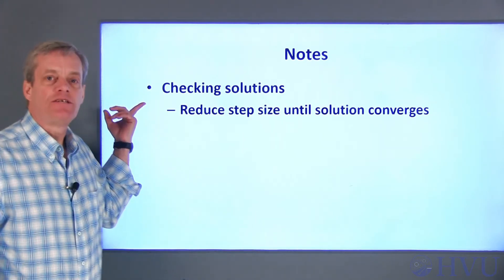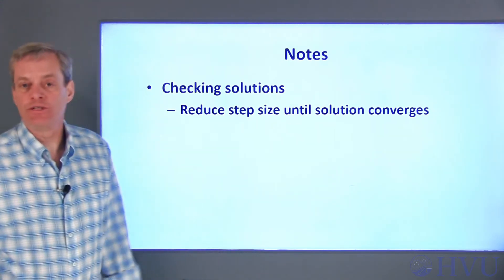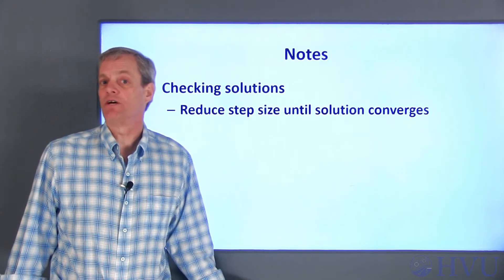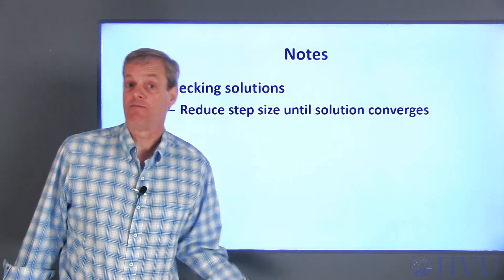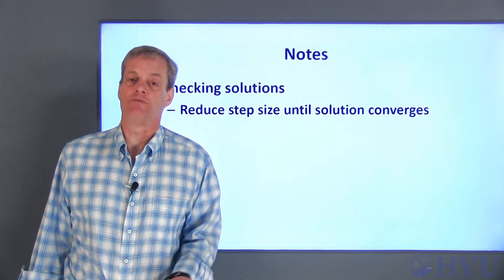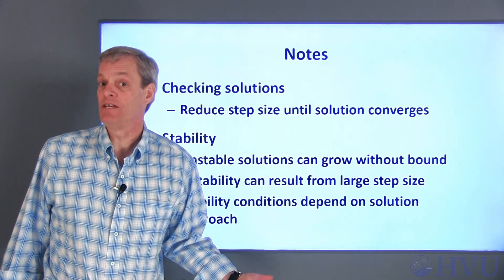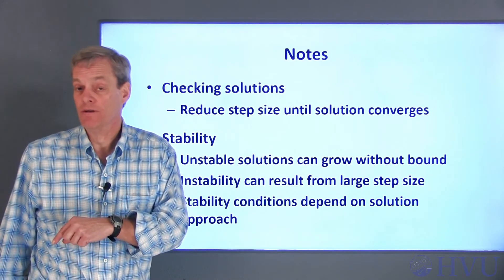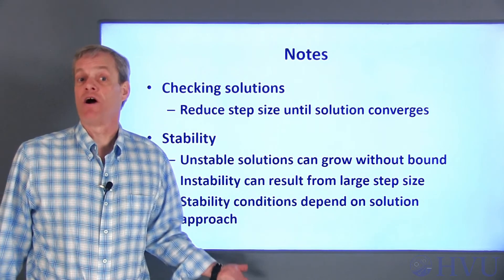There are two important issues when solving differential equations numerically: accuracy and stability. For accuracy, we reduce the spacing between points until we get a consistent result independent of further decreases in spacing — the same approach used for differentiation and integration. Solve with an arbitrary step size, reduce it, and check if the solution changes significantly. If the change exceeds a threshold, keep reducing. Stability is another issue: an unstable solution will grow toward infinity. Stability depends on the problem and solution approach. Some solutions become unstable if the step size exceeds a certain upper bound.